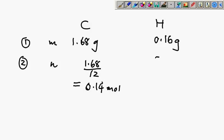And this one, 0.16 divided by 1 is simply 0.16. Now 14 and 16, the ratio is 7:8, isn't it? So because of this, you can put them together as C7H8. That's the empirical formula for the hydrocarbon.